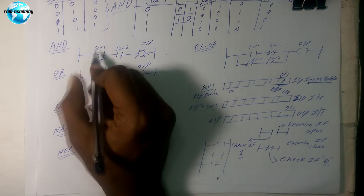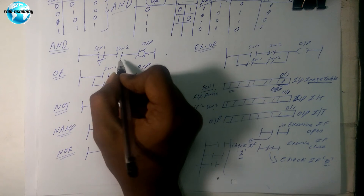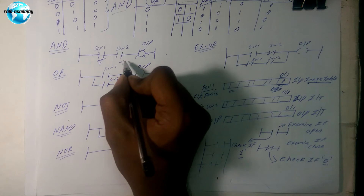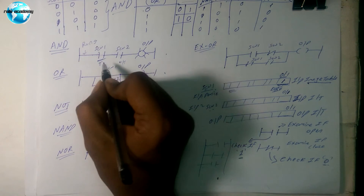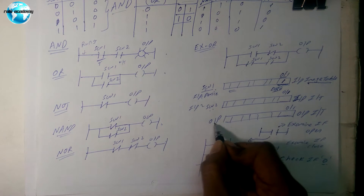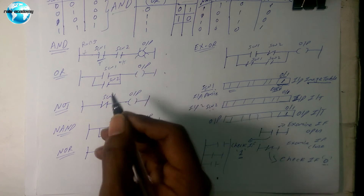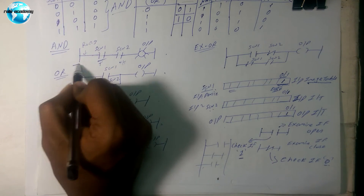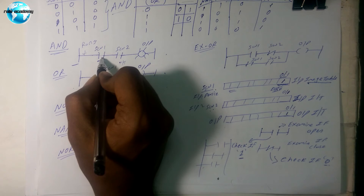If the condition is true — meaning the person has pressed the button — it will give a true indication. On a PC display, the contact will glow green. If the switch is not pressed it shows false; if pressed it shows true. When the rung becomes true, the output coil becomes true, the output image memory is set to one, and the output lamp glows. This is how AND logic works: if the button is not pressed, the bit is zero.